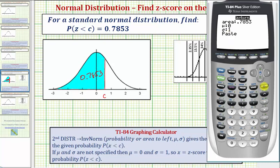Once we're on paste, we press enter again, which copies the information we just entered onto the home screen. Notice how if we arrow left, we see the inverse norm function, and then we have the probability or area to the left, followed by mu and sigma. So if we press enter.